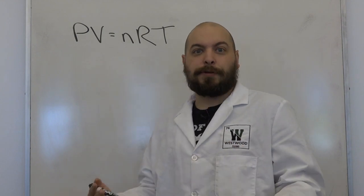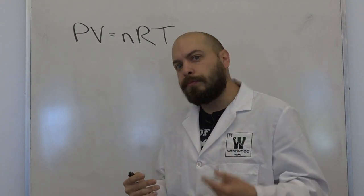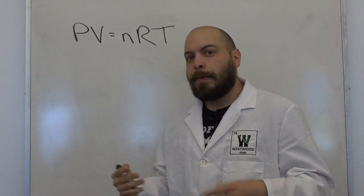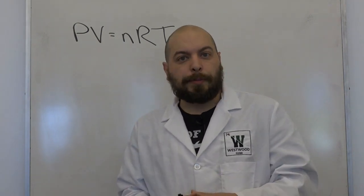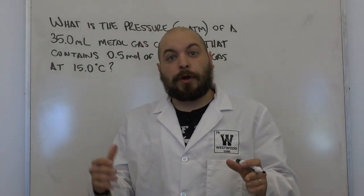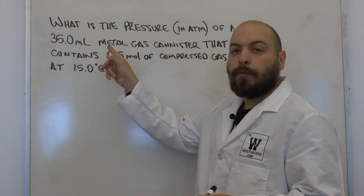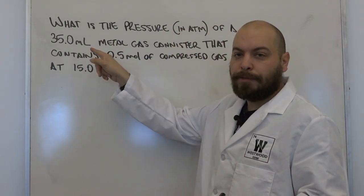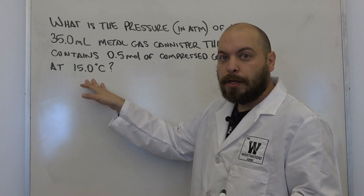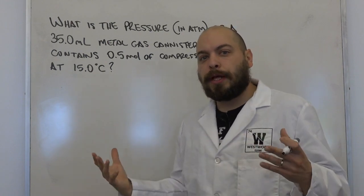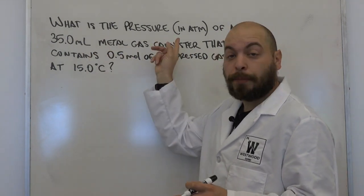PV equals nRT is one of the few equations you are going to be using in so many of these units. It's going to be given to you on the formula sheet, but it is one of the easier ones to remember. Let's start with a practice problem. We're going to apply our ideal gas law to find the pressure of a 35-milliliter metal gas canister that contains 0.5 moles of a compressed gas at 15 degrees Celsius. This is a prototypical ideal gas law question where I'm given volume, moles, and temperature, and I'm looking for pressure.